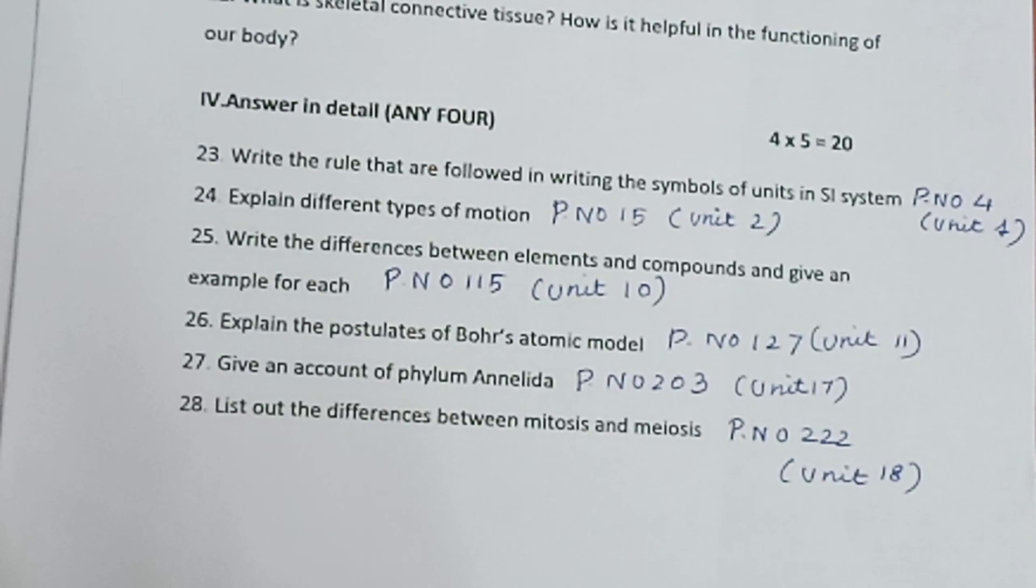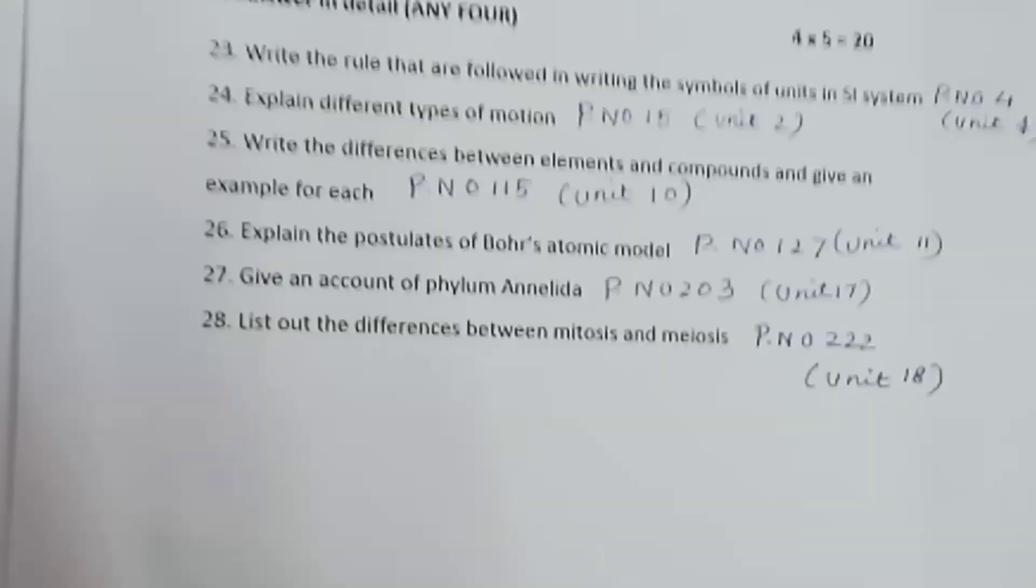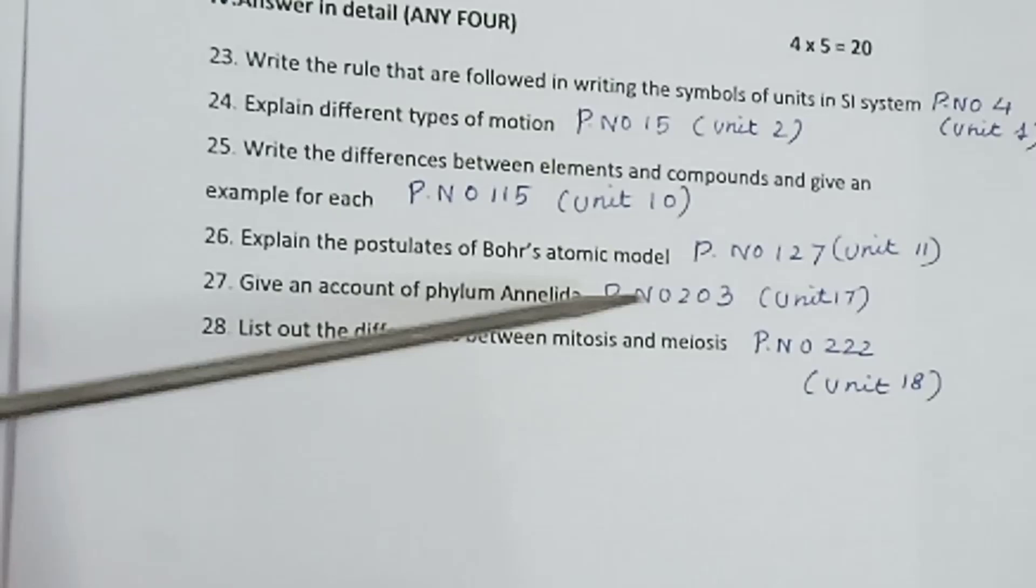Question 26: Explain the postulates of Bohr's atomic model. Page number 127, Unit 11. First point and the diagram are very important topics.